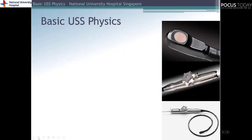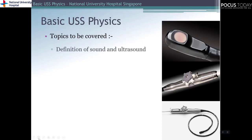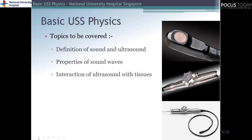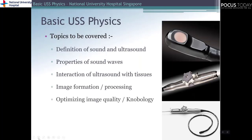Let's have an overview of what we will be covering. In this series of lectures, we will go through the definition of sound and ultrasound. We will look at the properties of sound waves and how ultrasound interacts with tissues — vital for image formation and explaining artifacts. We will then look at knobology and how to optimize ultrasound images, and finally at artifacts and probe controls for transesophageal echocardiography.